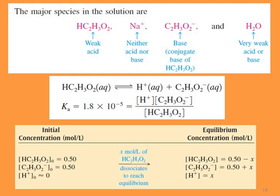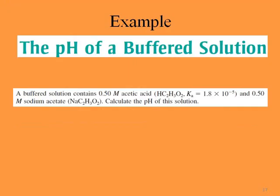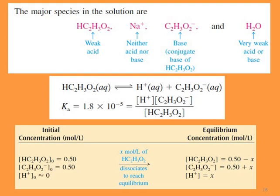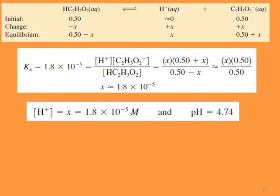We write the equation for acetic acid dissociation: Ka = [H⁺][CH₃COO⁻] / [CH₃COOH] = 1.8 × 10⁻⁵. Using an ICE table, the initial concentration of acetic acid is 0.5 and the initial acetate concentration is 0.5 (from sodium acetate). The initial proton concentration is approximately zero. At equilibrium: acetic acid = 0.5 − x, acetate = 0.5 + x, and [H⁺] = x.